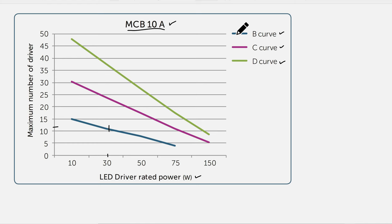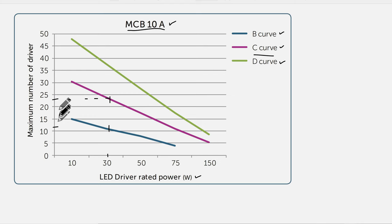Circuit breakers follow different tripping curves. If I used a C curve I would be able to have even more of those floodlights. For example, with a 10-amp circuit breaker following the C curve characteristics, instead of 11 floodlights I could possibly have 24 floodlights. Let's have a look at those tripping curves.